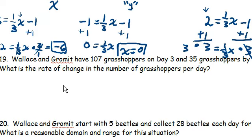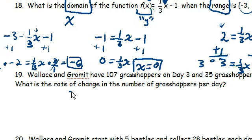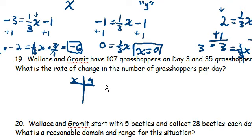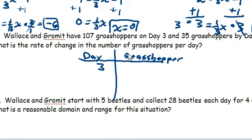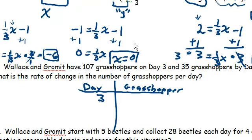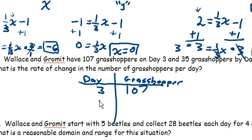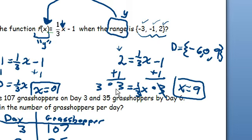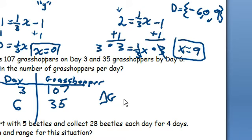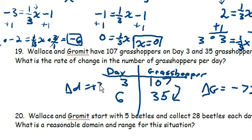Okay, number 19. Wallace and Gromit have 107 grasshoppers on day 3. You know what? We'll make it a little bit more intuitive here. So, day and grasshopper. So day is number 3. On day 3, they have 107 grasshoppers. On day 6, they have 35 grasshoppers. So what we need to take a look at is if we want to calculate the rate of change, we'll calculate the change in our grasshoppers over here, equals negative 72, and the change in our days over here equals positive 3.